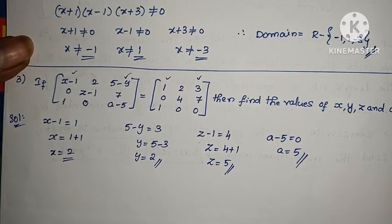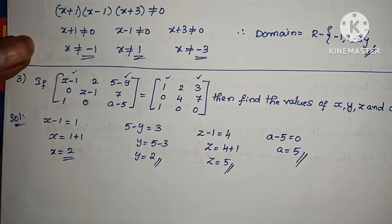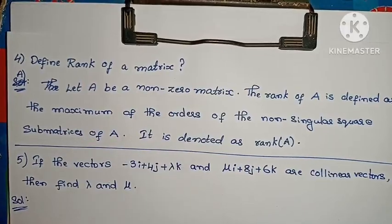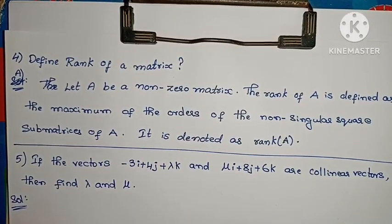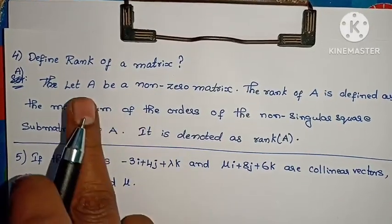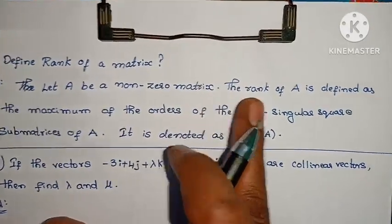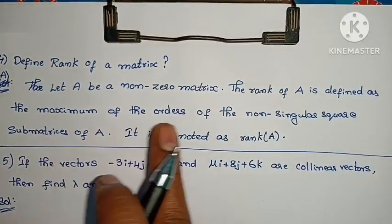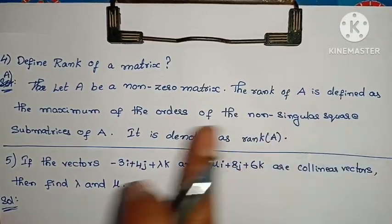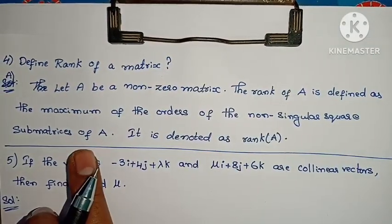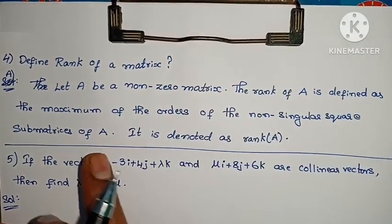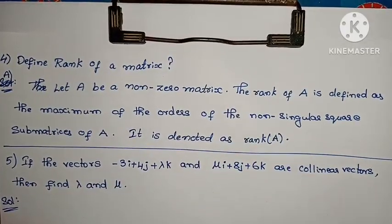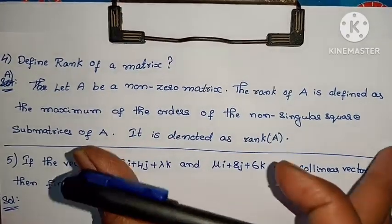Define rank of a matrix. Let A be a non-zero matrix. The rank of A is defined as the maximum of the orders of the non-singular square sub-matrices of A. It is denoted by rank of A.